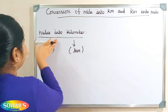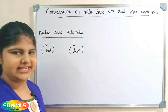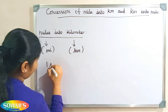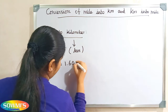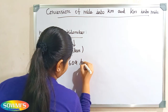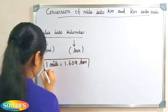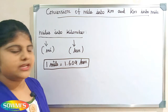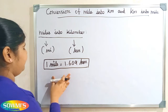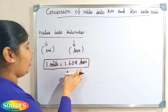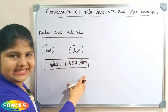First we will see how to convert miles into kilometers. The formula for converting miles into kilometers is: one mile is equal to 1.609 kilometers. So to convert miles into kilometers, we just have to multiply the mile value by 1.609. Now we will take some examples.